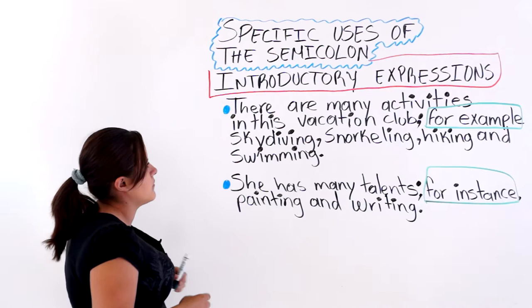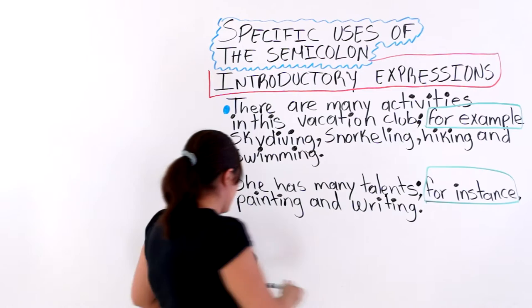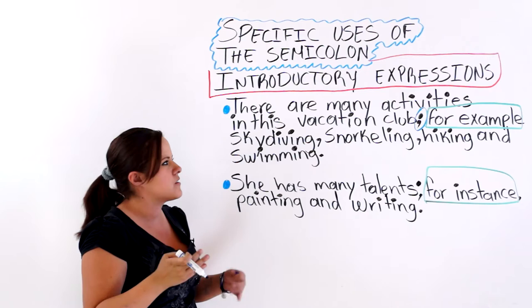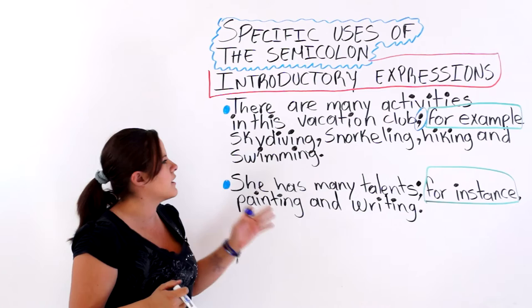The first example I have here on the board says, 'There are many activities in this vacation club.' And then, as you can see, we used a semicolon before the introductory expression: for example, skydiving, snorkeling, hiking, and swimming.